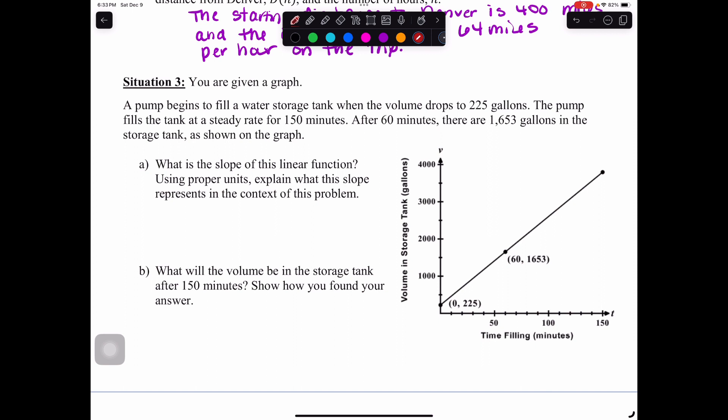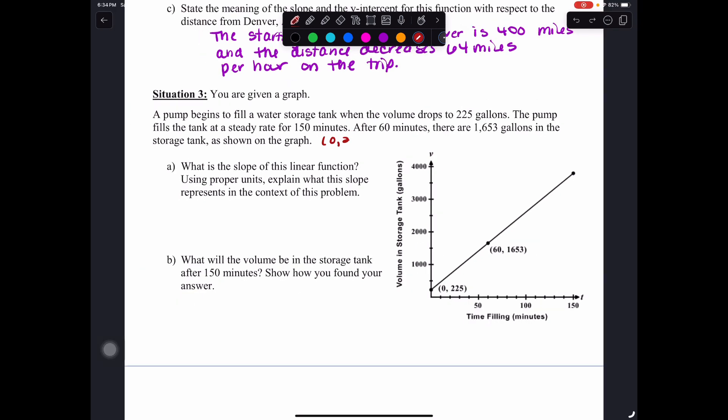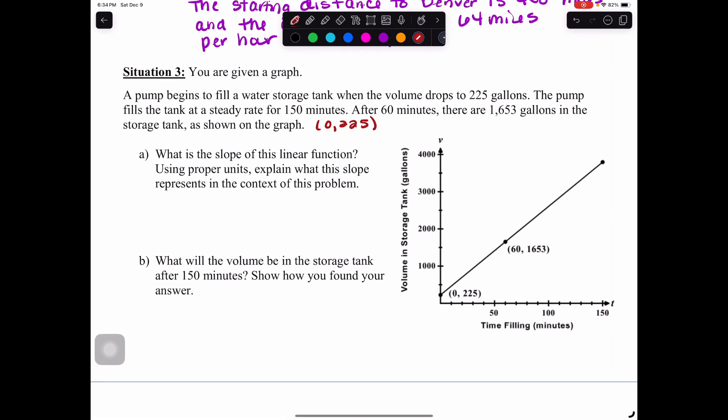The first question says, what is the slope of this linear function? Normally when we have a graph, we can count rise over run. But if it's not a nice graph, rise over run is not your best method. There are no grid lines here. Our coordinates are not falling at nice spots. They're halfway in between blocks. It's going to be difficult to count rise over run here. So it's better to take the two coordinates that we're given and use the slope formula once again. I will write my coordinates up here. We've got 0 and 225, and then we also have 60 and 1,653.